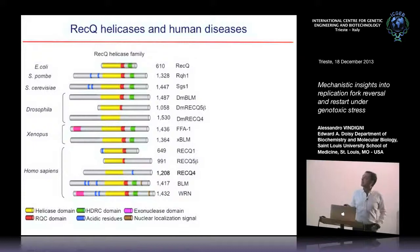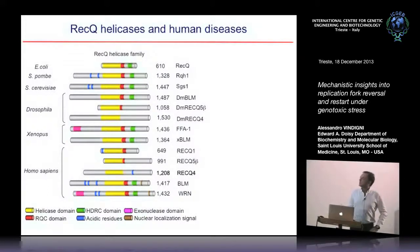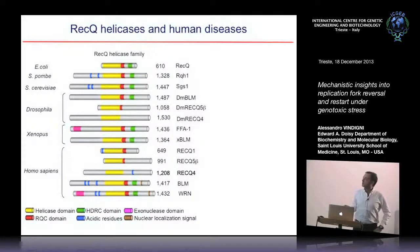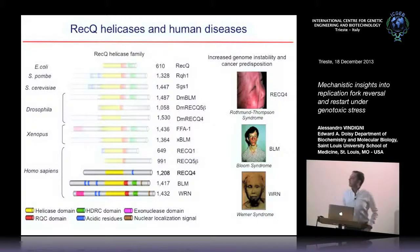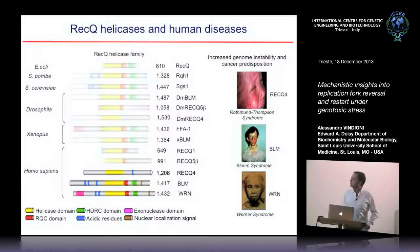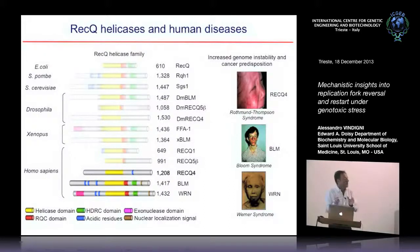Before showing the data, a brief introduction on RECQ helicases — enzymes involved in genome stability maintenance and highly conserved among organisms. Bacteria have just one, but human cells have five: RECQ1, RECQ5, RECQ4, BLM, and Werner. There are also disorders associated with mutations in some of these genes, with very different clinical features — for example, Werner syndrome is associated with premature aging — suggesting these helicases play distinct functions despite all being involved in genome stability.